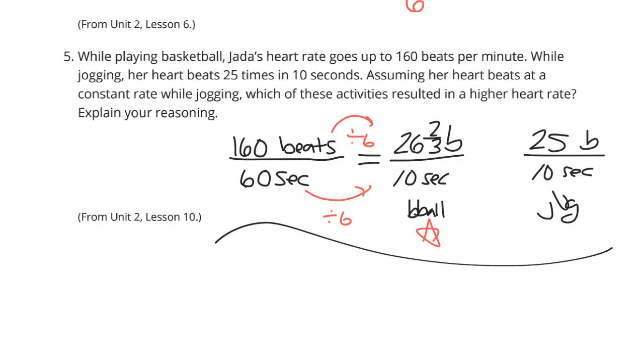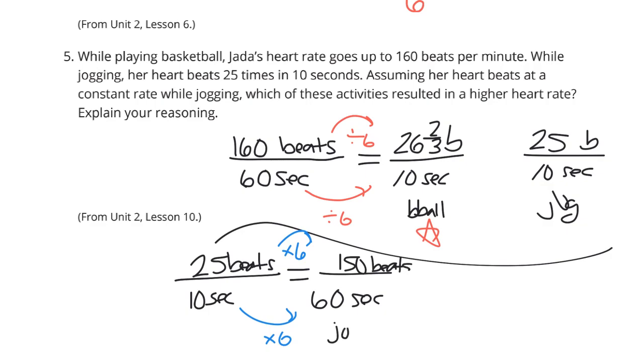Now, what if we wanted to try it going the other way? If we have 25 beats in 10 seconds, what if I try to get that to 60 seconds? Well, in this case, it's multiplying by 6 to get to 60 seconds, because 60 seconds, again, is the 1 minute. And when I take 25 times 6, we get 150 beats in the 60 seconds. That was the jogging. And comparing that to the 160 beats in 60 seconds for basketball, once again, basketball does show the higher heart rate, whether you simplified it or increased it.